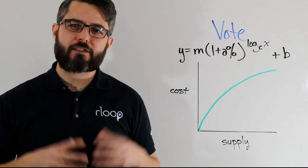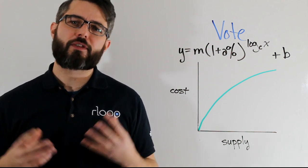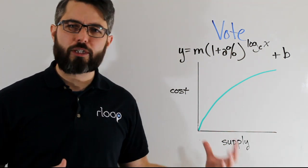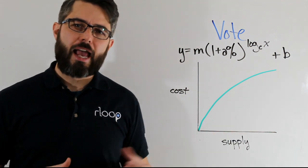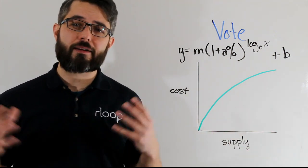A bonding curve acts as an automated market maker, and what this means is that there's no central authority issuing project specific tokens and there's no limit to the number of tokens that may be created.